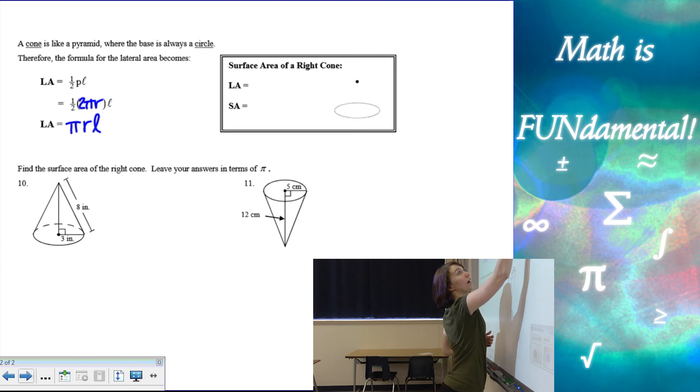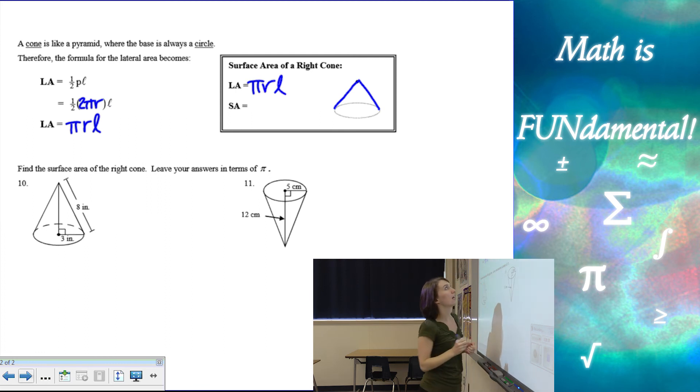So, here I've got my cone. My lateral area is pi r times the slant height. And the surface area is going to be pi r times the slant height plus the area of the circle, which is pi r squared.